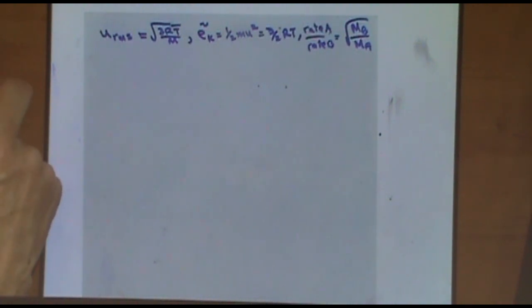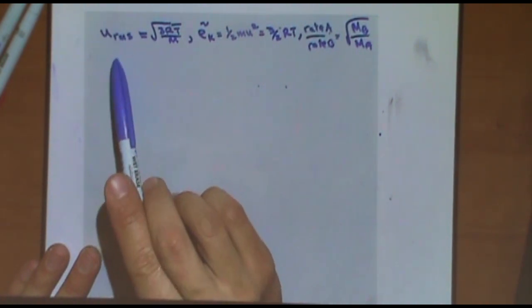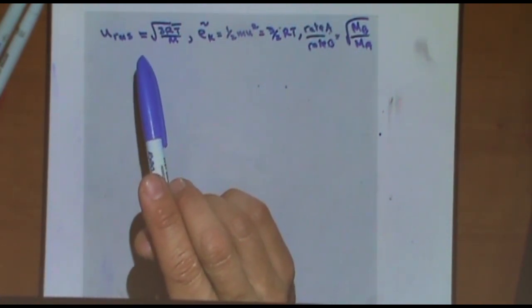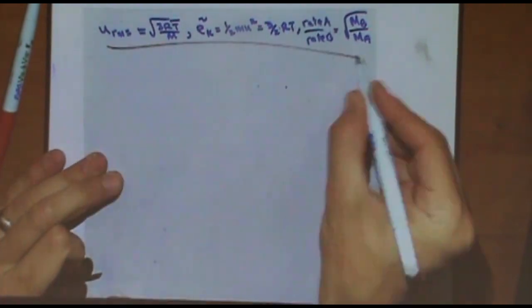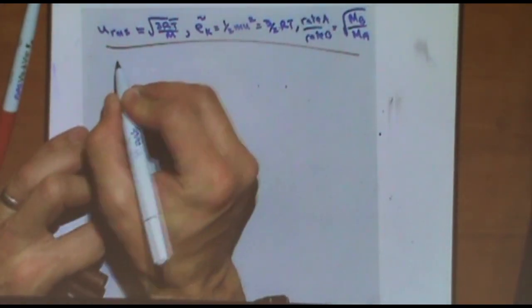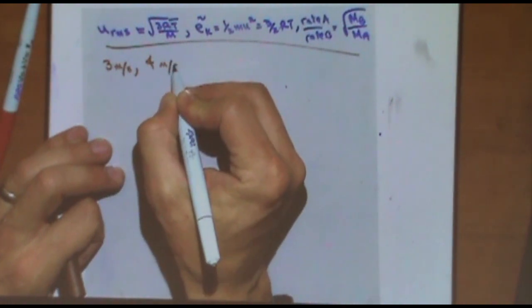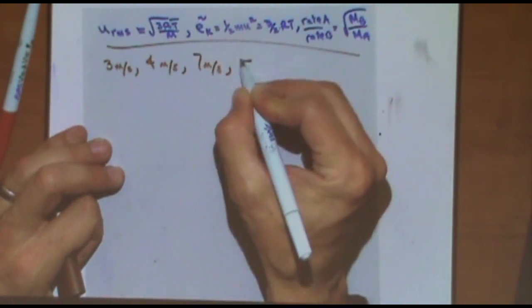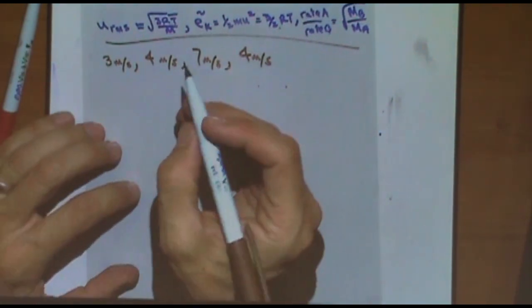Let's focus in on what was asked about. First, the root mean square velocity. The question was not about this formula in particular, but what mathematically does the root mean square velocity mean? So if I gave you a bunch of velocities, how would you find it? This is just wondering what the root mean square is. For example, if I gave you velocities: three meters per second, four meters per second, seven meters per second, and another four meters per second - four molecules going those speeds. Let's mathematically calculate what root mean square means.